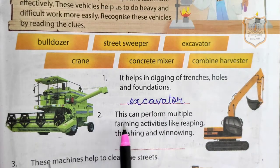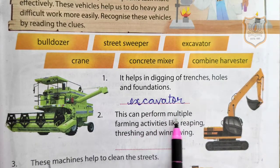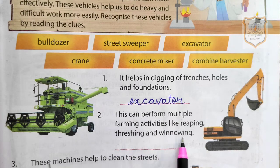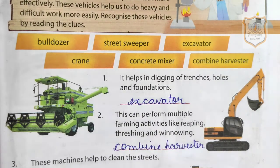Second: this can perform multiple farming activities like reaping, threshing and winnowing. The name of the vehicle is Combine Harvester.